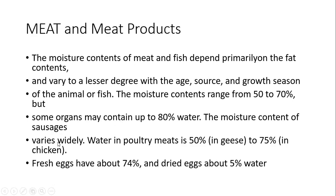The moisture content of sausages varies widely. Water in poultry meats is around 50% because fat content is also low in poultry. Some organs may contain up to 80% water, such as those with hollow cavities like the stomach and kidneys. Fresh eggs have about 75% water and dried eggs about 5% water.